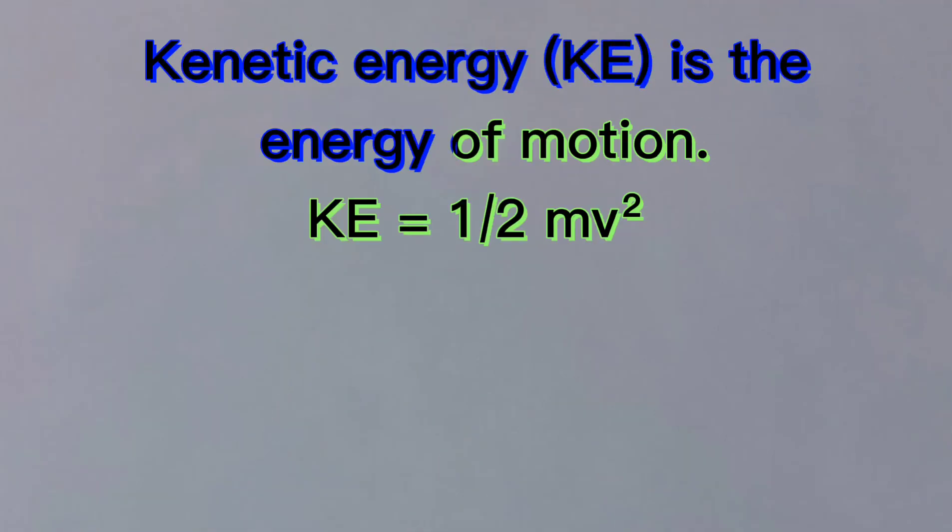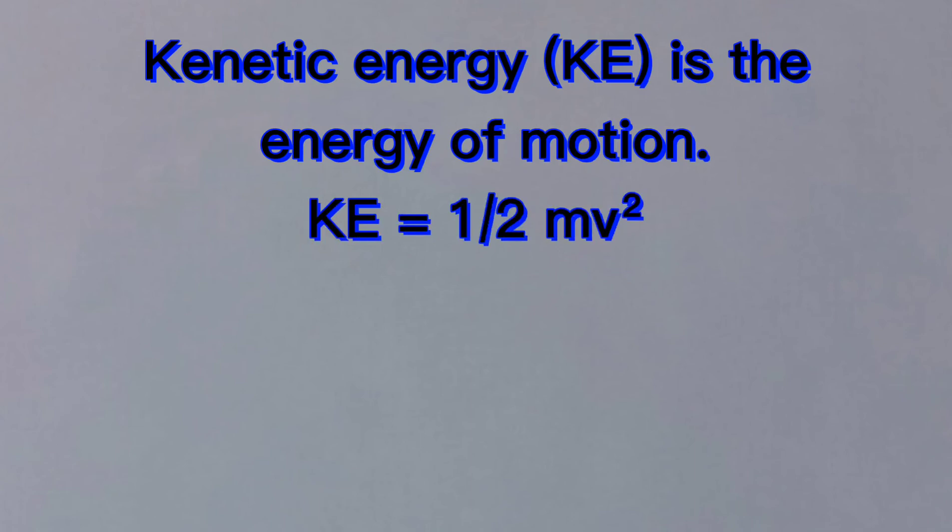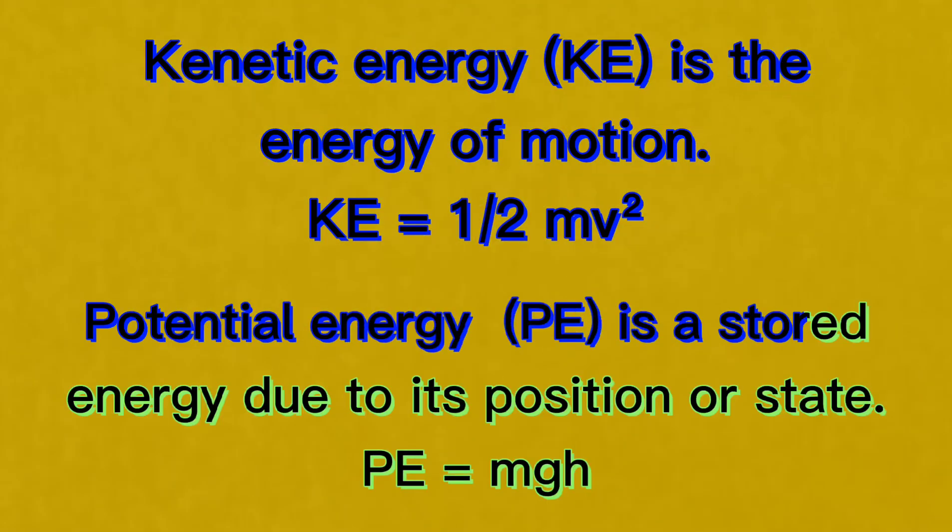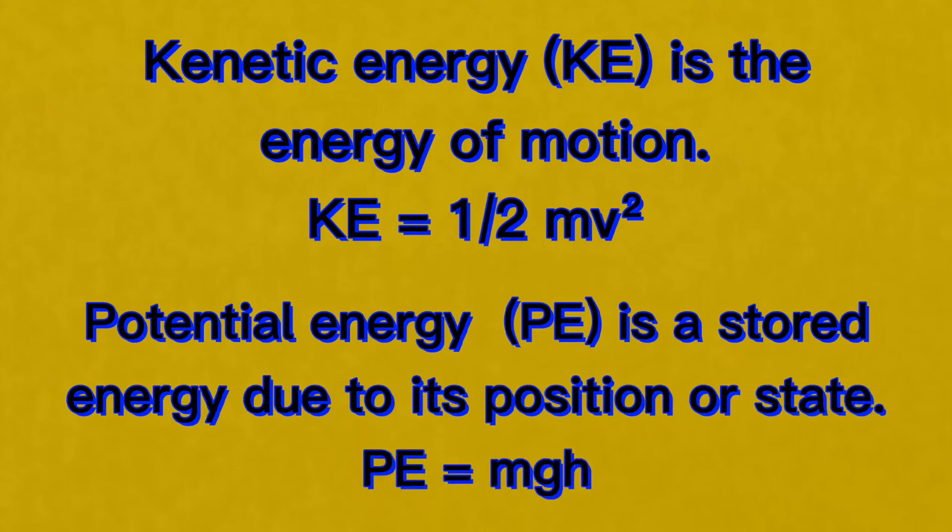Again, kinetic energy is the energy of motion. You can calculate it using the formula, kinetic energy equals 1 half times mass times velocity squared. And potential energy is a stored energy due to its position or state. The equation to calculate it is, gravitational potential energy equals mass times gravity times height.